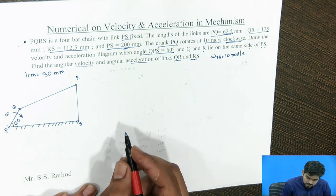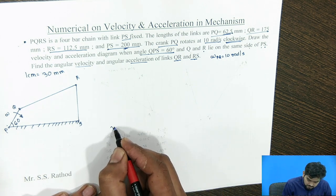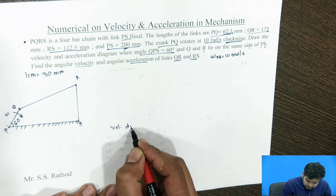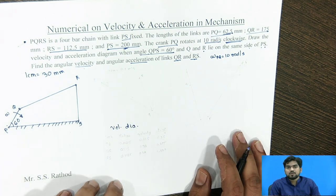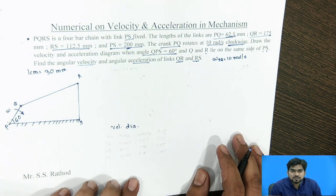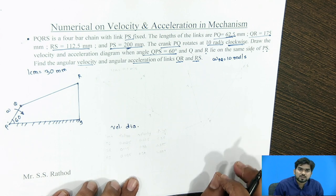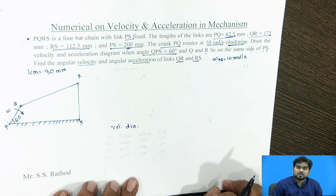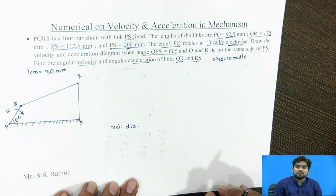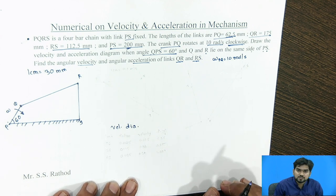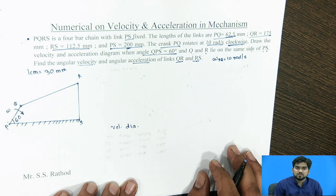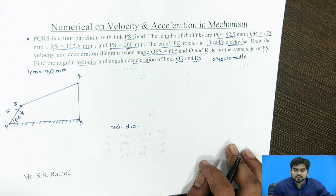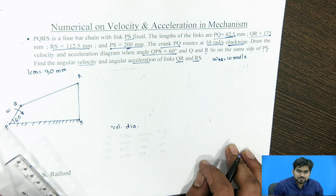First of all, we draw the velocity diagram. For drawing the velocity diagram, remember this: the velocity of any link which has rotary motion should be perpendicular to that link.